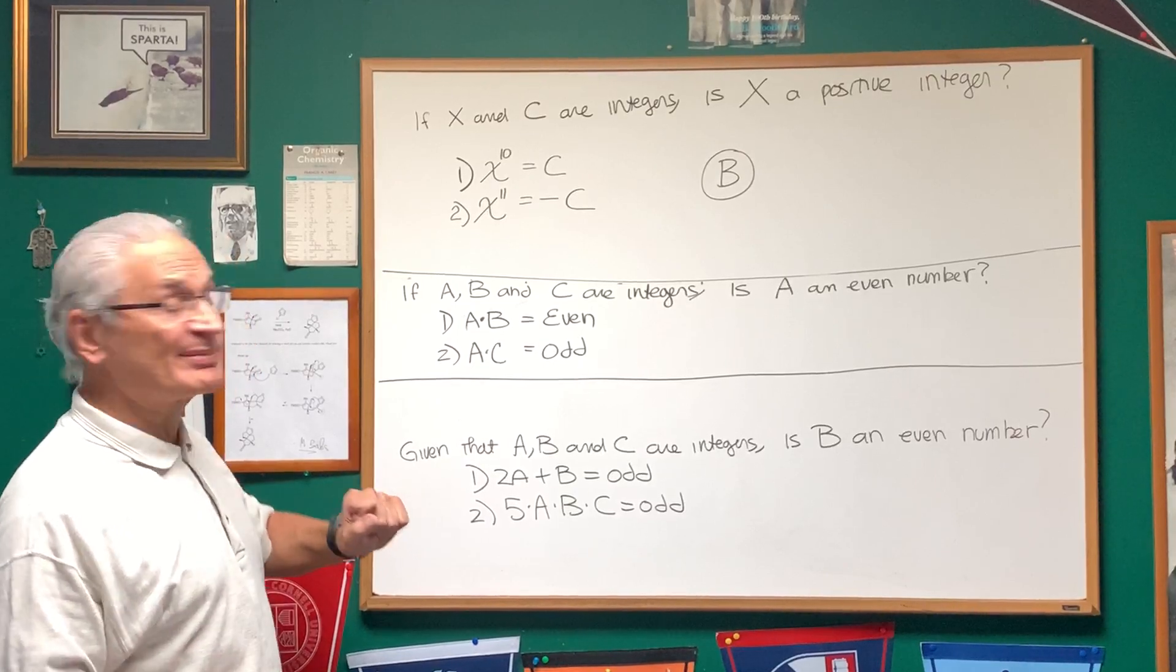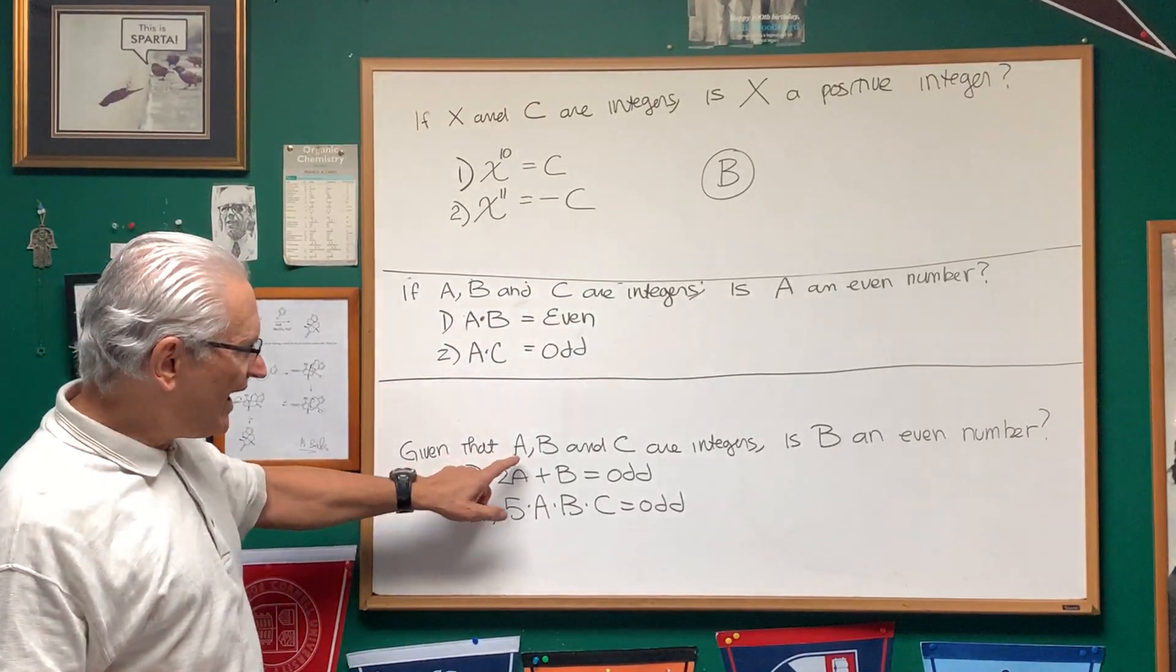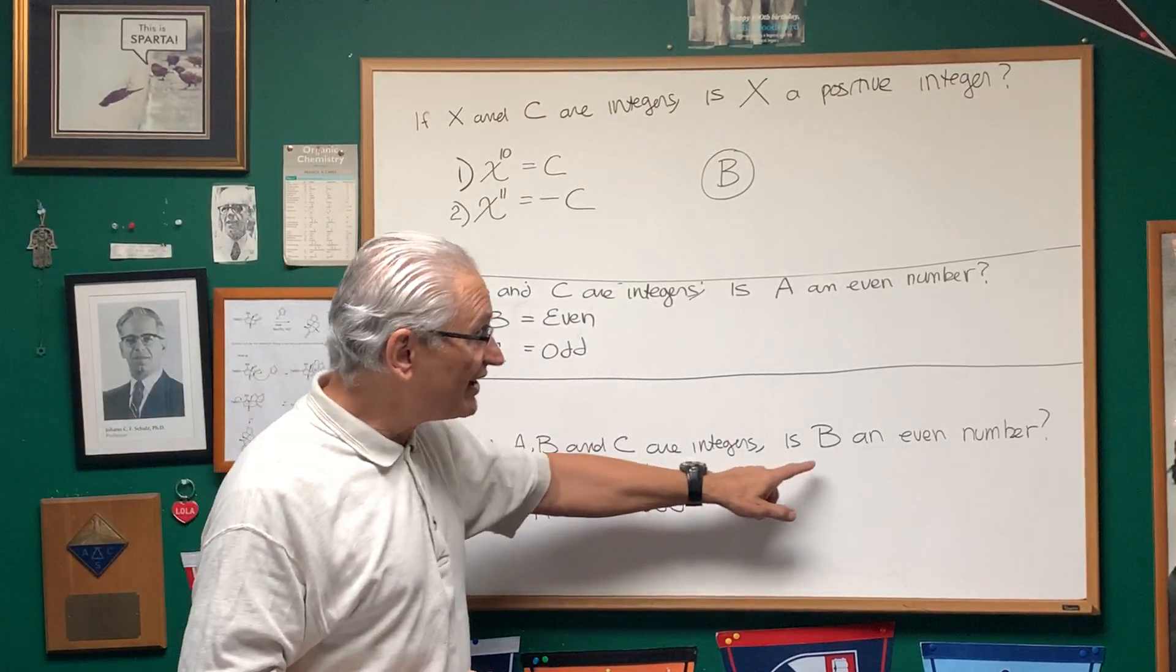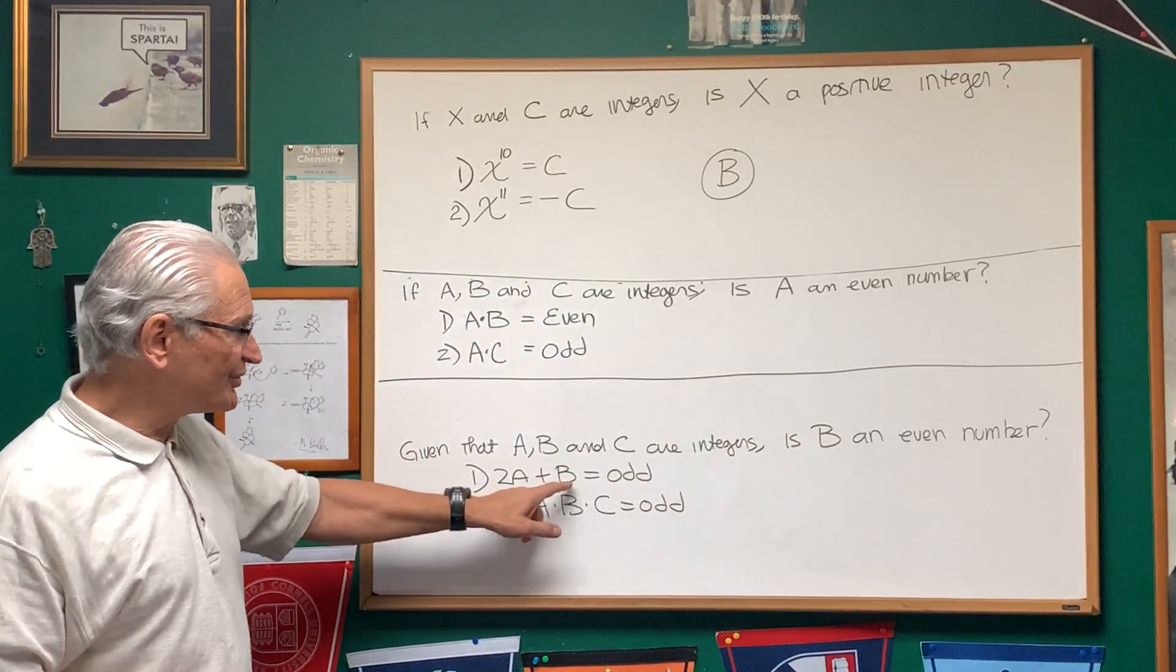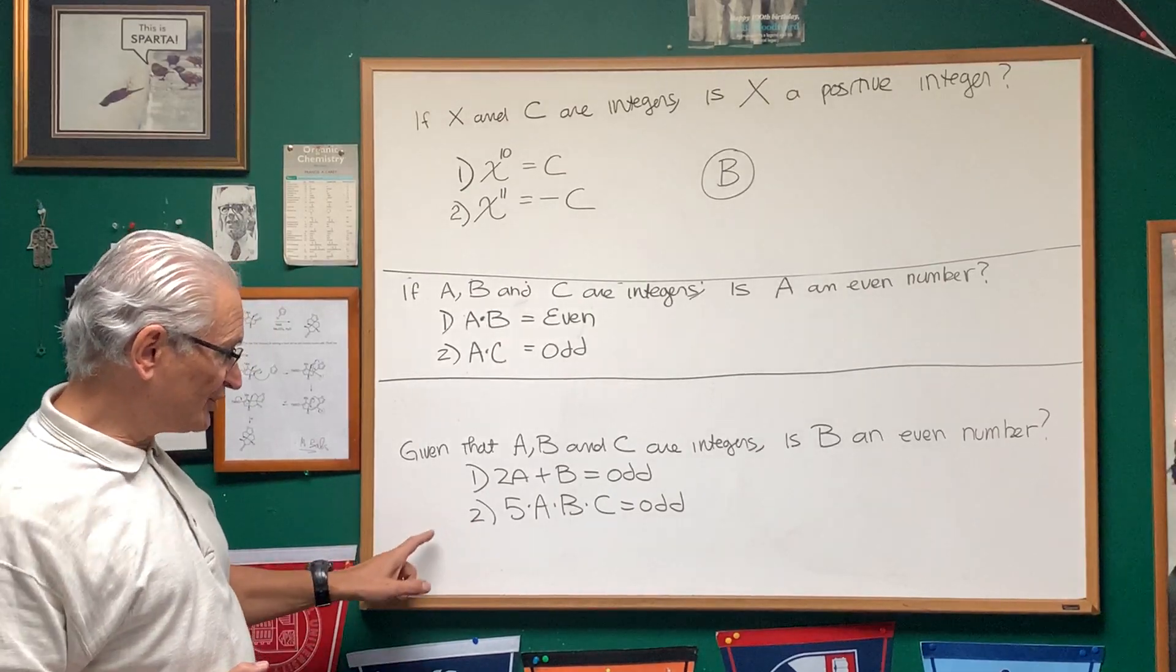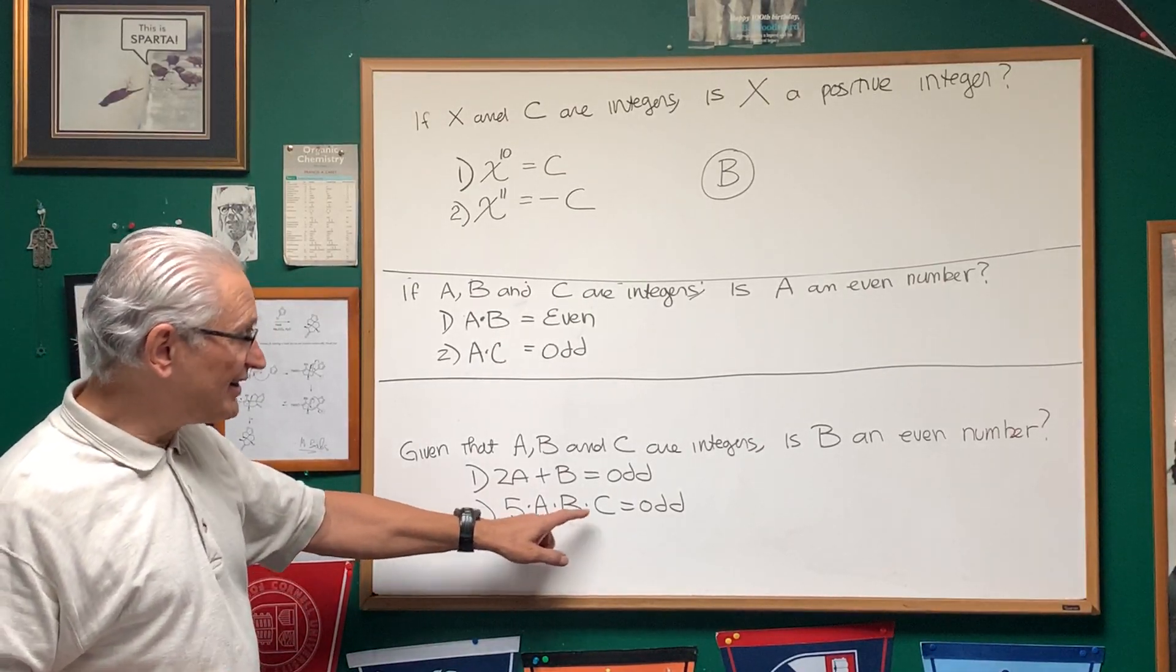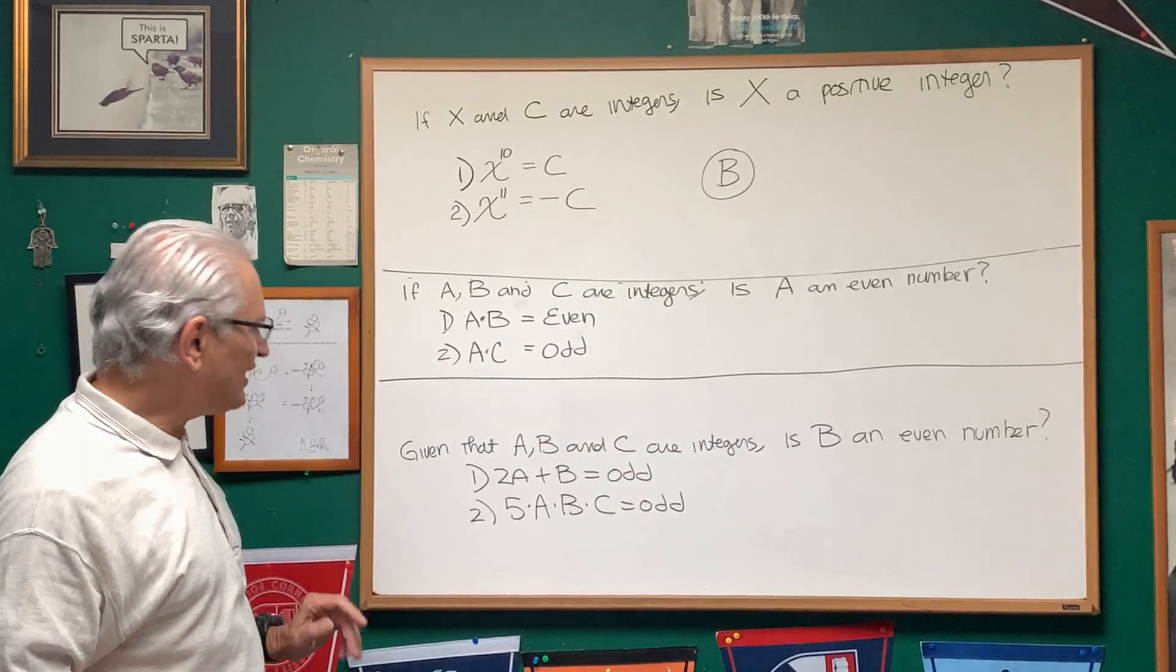Now let's go to the third problem of the same type. Given that A, B, and C are integers, is B an even number? Statement one, two A plus B is odd. Statement two, five times A times B times C is odd.